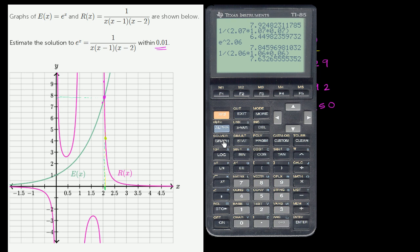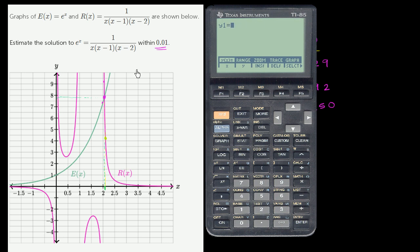So let's go to graph. What I'm going to do is graph both of these functions. The first function - let me clear this - the first one is e of x, which in the graphing calculator will be y1. That's going to be e to the x power. And then the second one, y2, will be r of x, which is 1 divided by x times x minus 1 times x minus 2. I have to close this parentheses as well. So I've entered the graph.